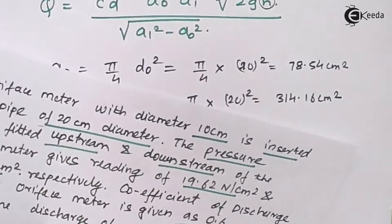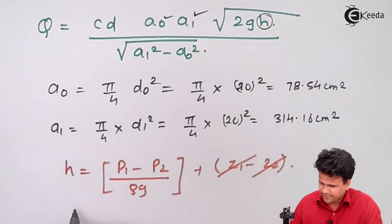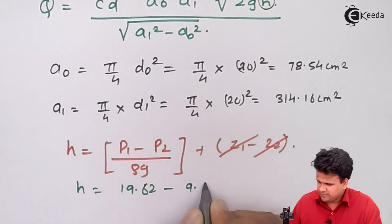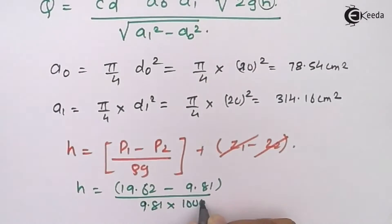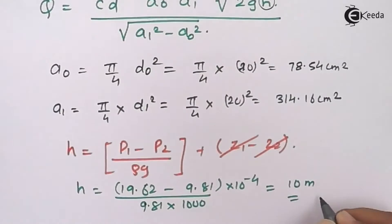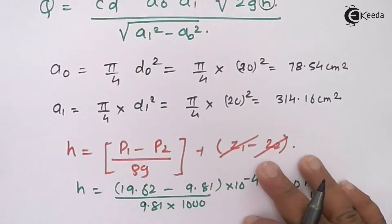On substitution these two parts will cancel away and we are left with h equals 19.62 minus 9.81 into 9.81 into 2000. Since these pressures are in Newton per centimeter we multiply by 10 raise to minus 4. This will give us approximate value as 10 meters or 1000 centimeters. So we have calculated the pressure energy head across the two sides of the orifice meter.